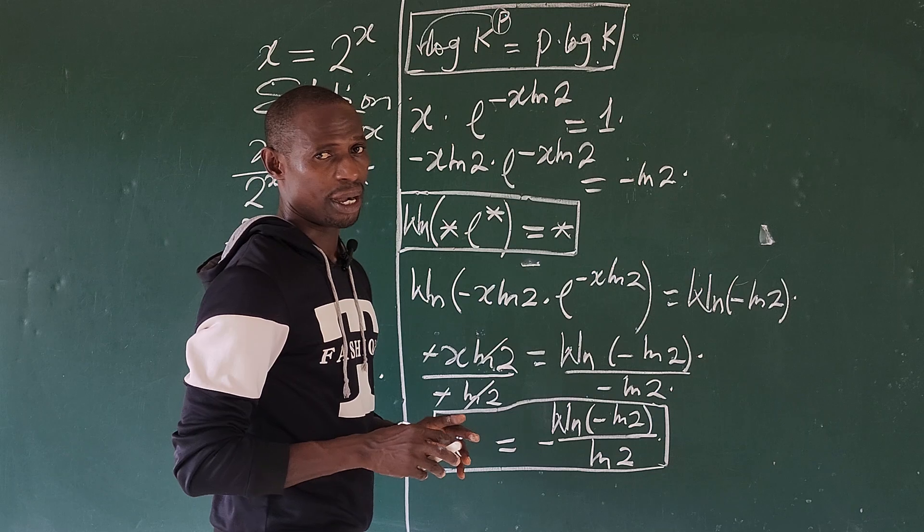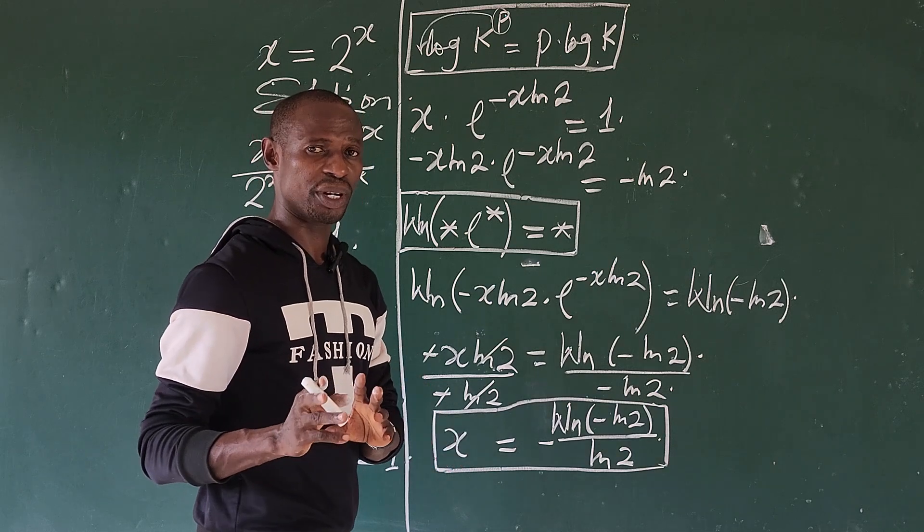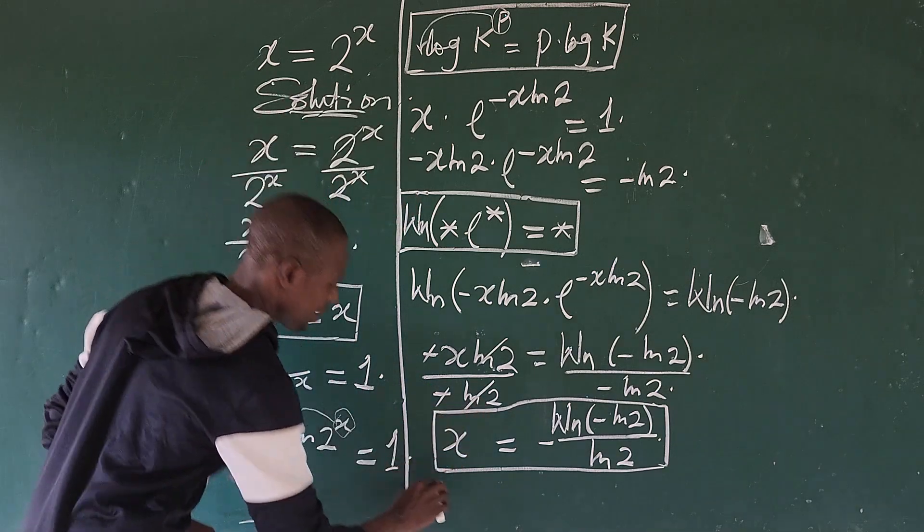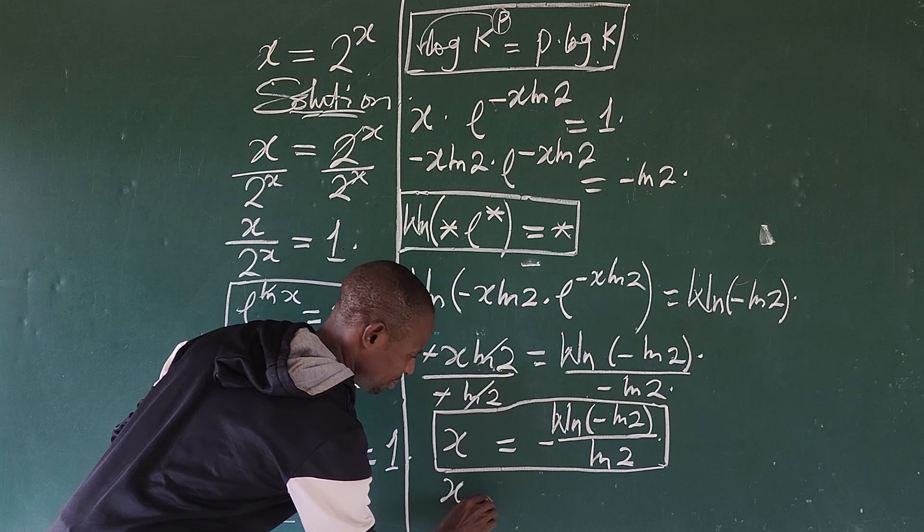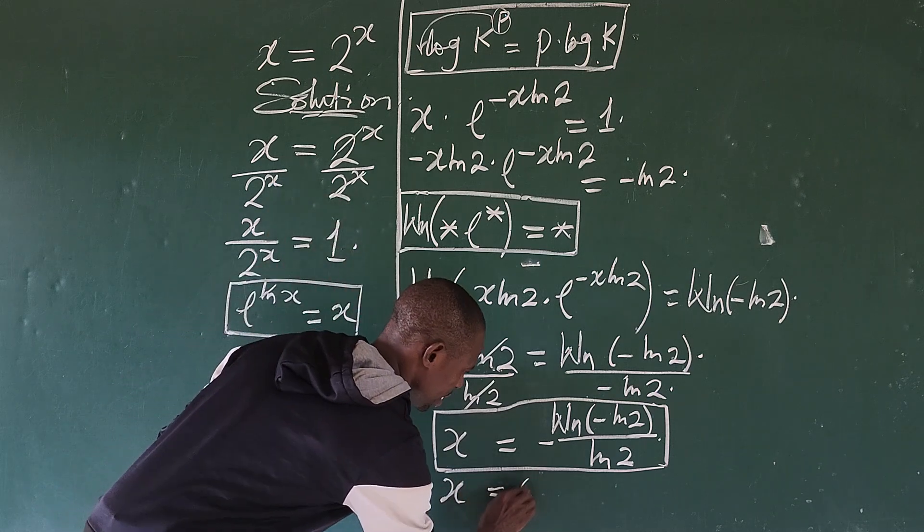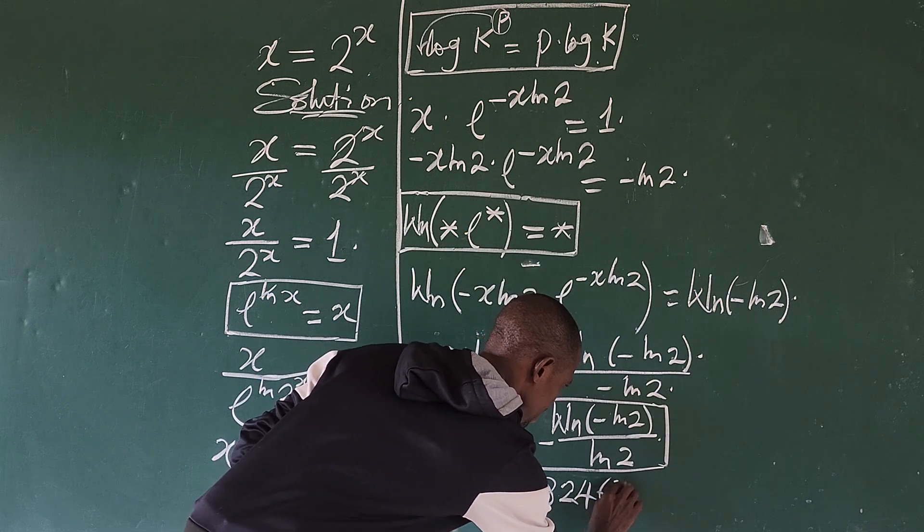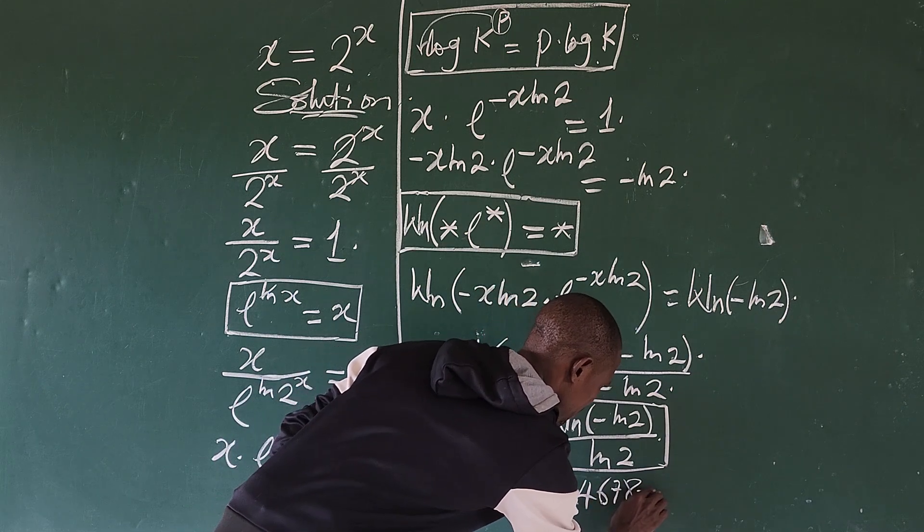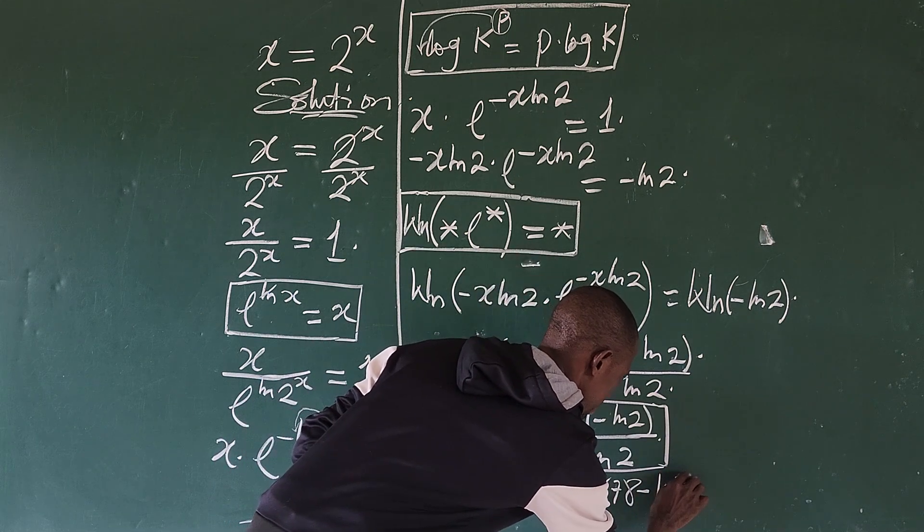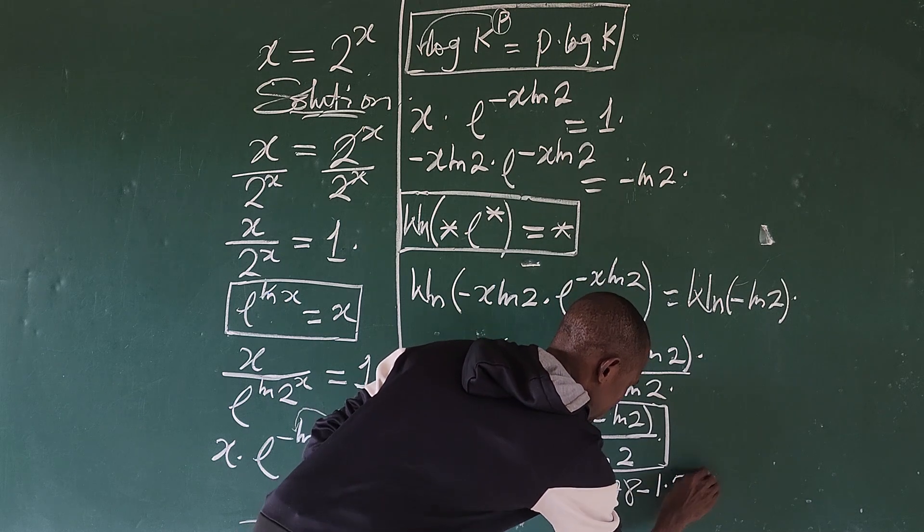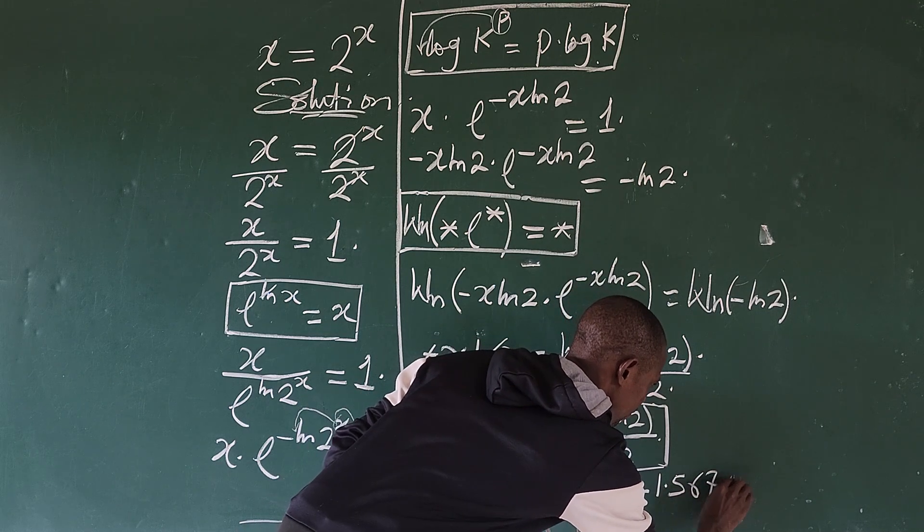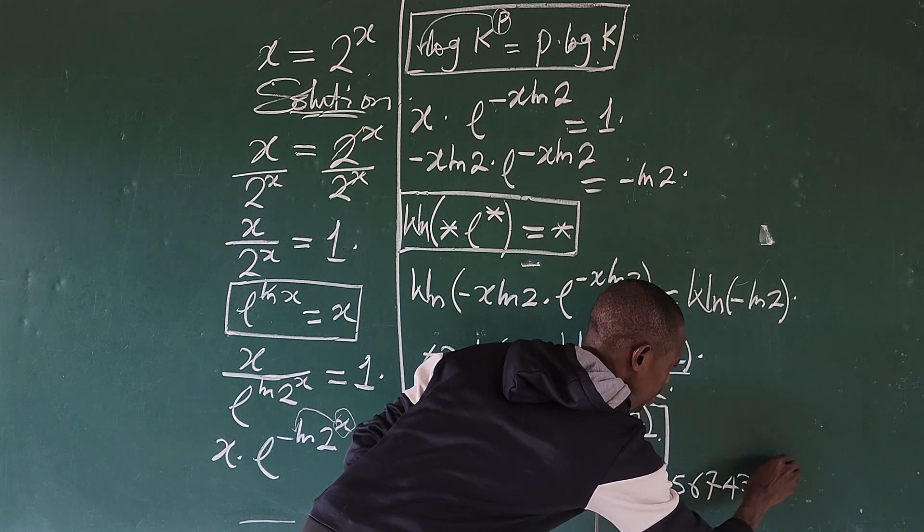Let me try to write it well. Then if n is equal to zero, some of the numerical values, let me bring out one of the numerical values of x here. So we're going to have x is equal to 0.82467 minus 1.56743 i.